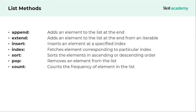The insert method inserts an element at a specified index in the list. The index method fetches the element corresponding to a particular index passed as an argument. Sort method sorts the elements in ascending or descending order based on a parameter. Pop method is used to remove an element from the list, based on index, but can be used without an index as well. Count method counts the frequency of an element in the list. Having understood these methods, let's see them in action in Jupyter Notebook.